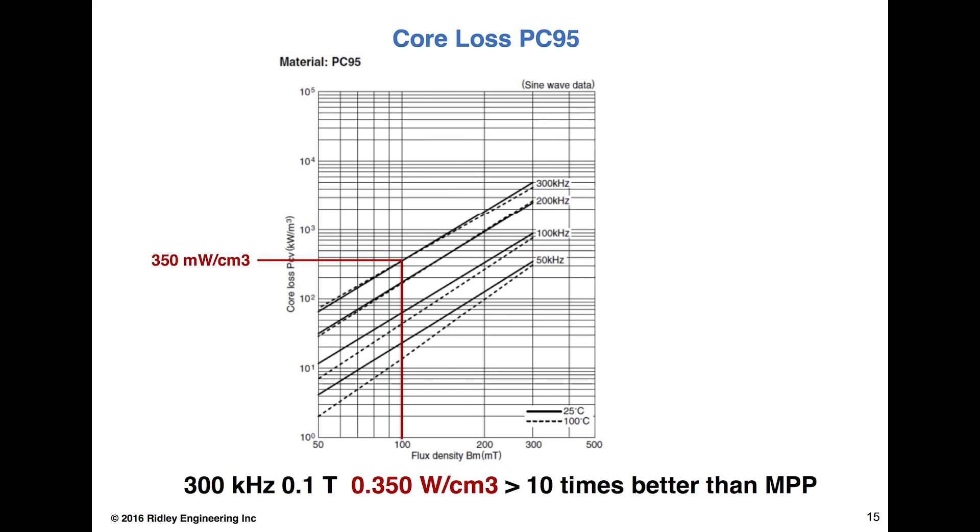Now we know that the powdered cores are better in terms of the saturation level we're allowed to have, and for the DC inductance that's certainly a good thing. So why should we use ferrites? Well, we use ferrites because they have the absolute lowest loss. If we take the same 300 kilohertz, 0.1 Tesla excitation, we see now that the core loss is actually down to 0.35 watts per centimeter cubed. It's better than 10 times better than the MPP cores.